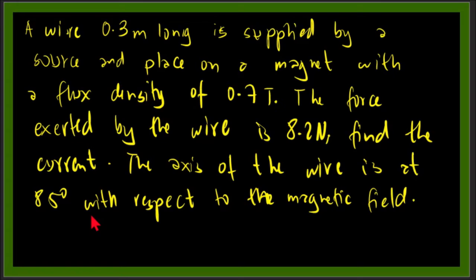The axis of the wire and the magnetic field are not perpendicular—they are 85 degrees with respect to each other. So we won't be using the normal formula F = βIL, but rather the one with the sine function.